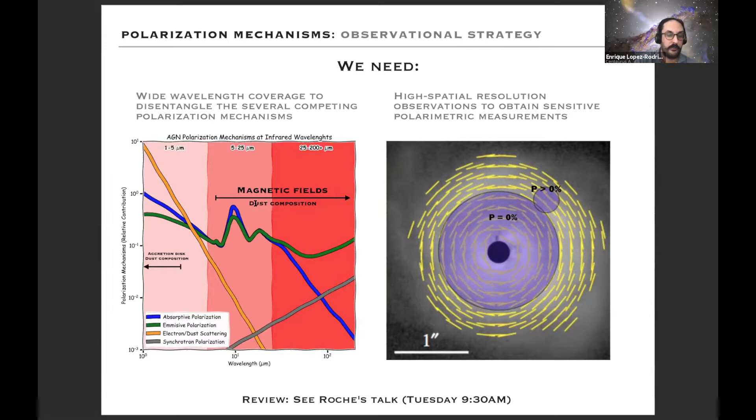The other thing that you need is high spatial resolution observations, so polarimetry is a vector quantity rather than a scalar quantity. If you have low spatial resolution and you are adding vectors, you end up with zero degree polarization. So high angular resolution will give you better sensitivity.